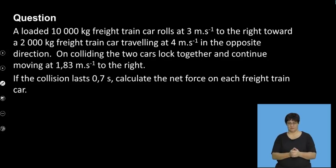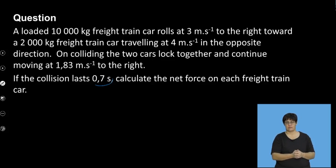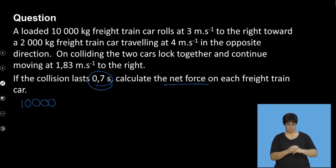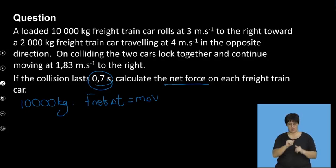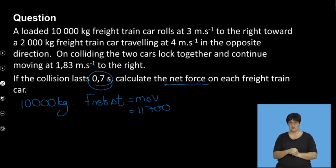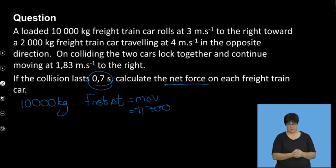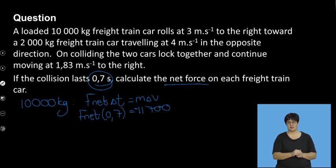So next: if the collision lasts 0.7 seconds, calculate the net force. We want the net force on each freight train. Looking at the 10,000-kilogram car: we use F net times delta T equals M delta V. We know the impulse on the 10,000-kilogram train was 11,700 newton seconds to the left, so that's negative. We want F net, and delta T is 0.7 seconds.